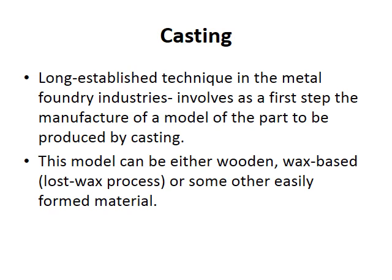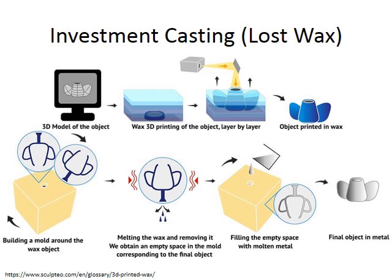I'm going to start with casting. It's one of the most traditional — it's been around a long time in the metal foundry industry. It involves, as a first step, the manufacture of a model of the part to be produced by casting. This model is either wooden, but more often than not it's wax-based. With the advent of 3D printing and rapid prototyping, it's actually very easy now to get a wax 3D model.